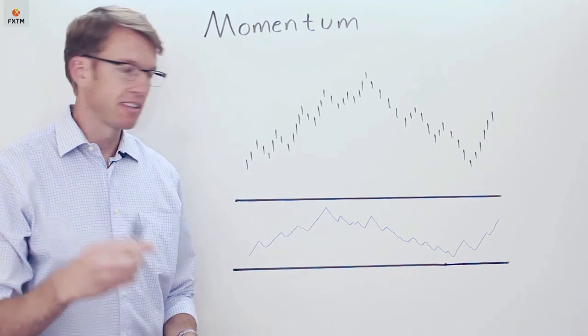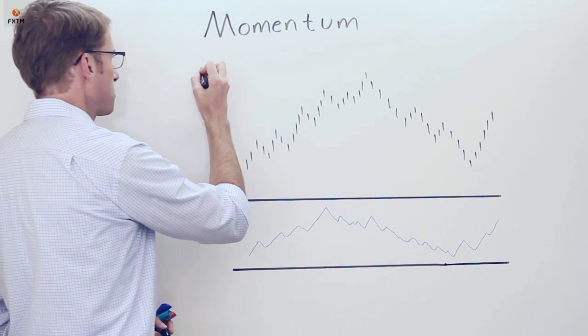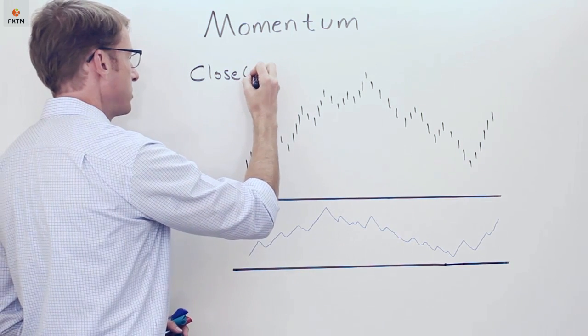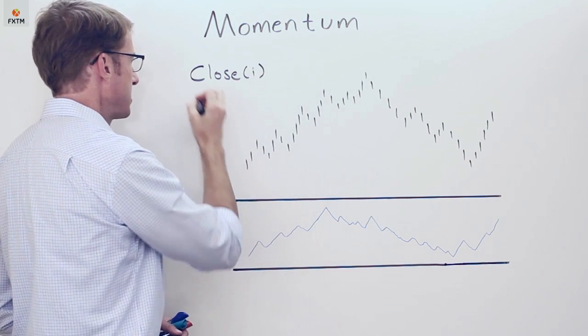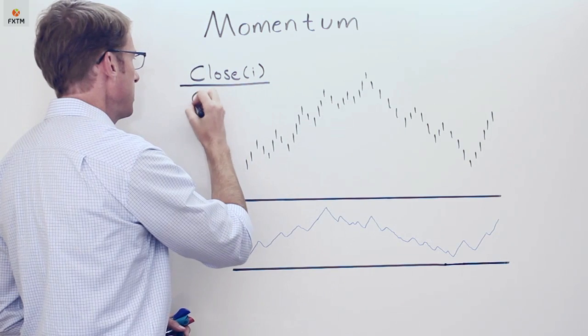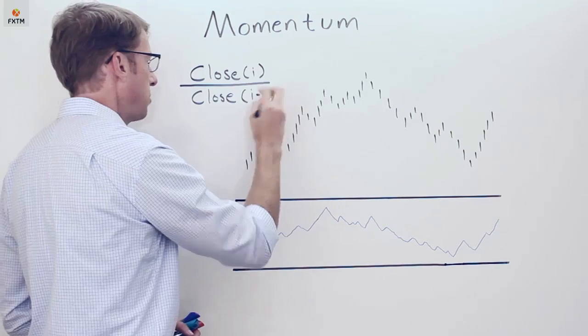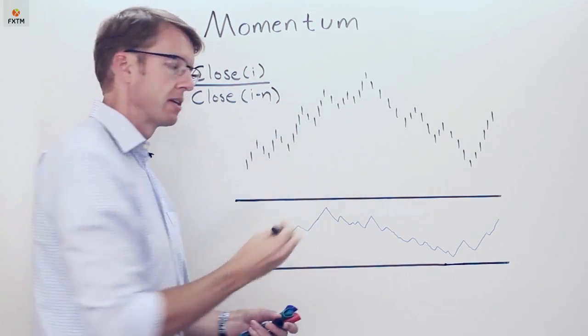It's basically calculated as the close price as of the most current period (i) divided by the close price of i minus n, and by n I mean that's a look back period.